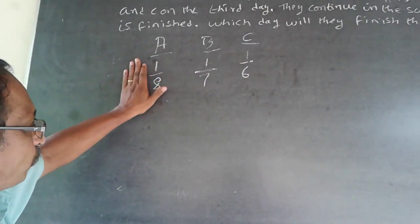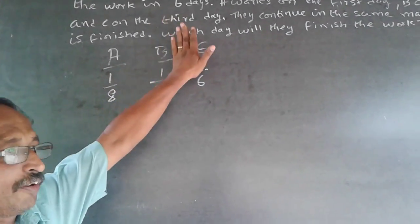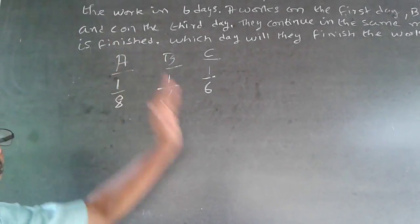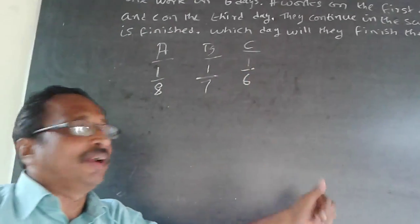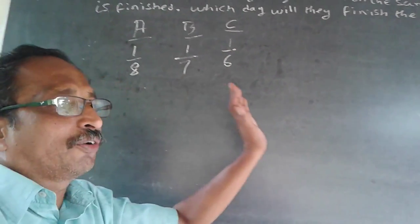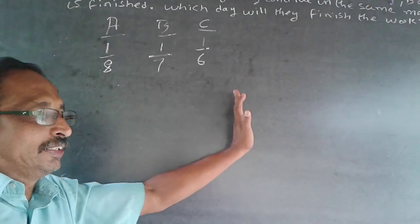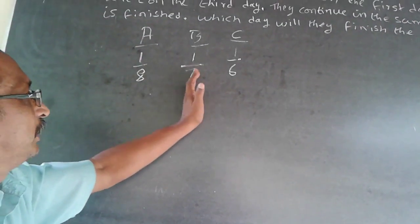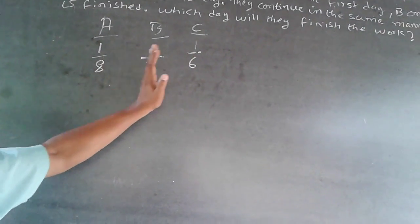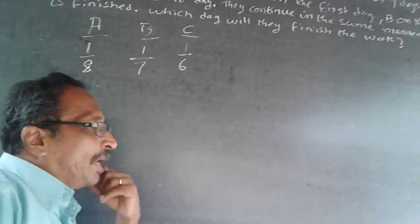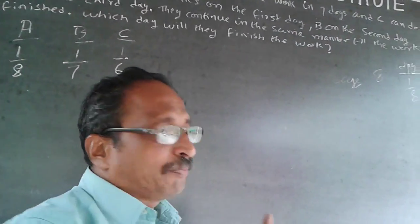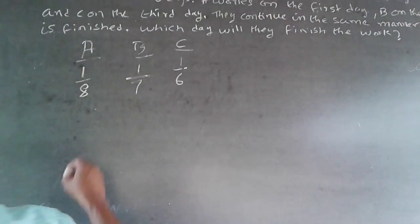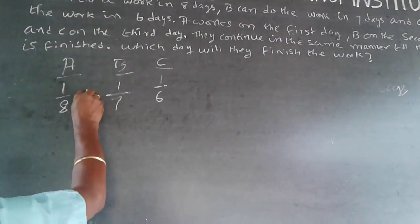If all three work together — though it is not given in this question, just as an example — the answer will definitely be less than 6. But because they are working on alternate days (A first day, B second day, C third day, and so on), the minimum will be 6 and the maximum will be 8. So, since a minimum of 6 days of work is required, I will add all their contributions.